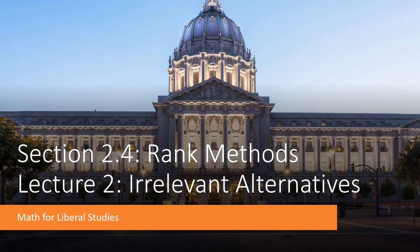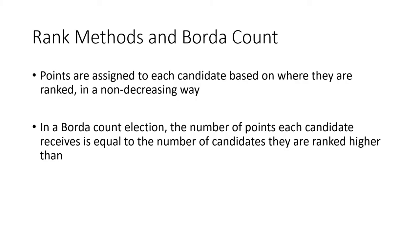This is the second video lecture for section 2.4 on rank methods. In this lecture I'll be talking about something called irrelevant alternatives. We've been talking about rank methods in which points are assigned to each candidate based on where they're ranked on a ballot in a non-decreasing way. A specific kind of rank method is the Borda count, where the number of points you get equals the number of candidates you're ranked higher than on each ballot.